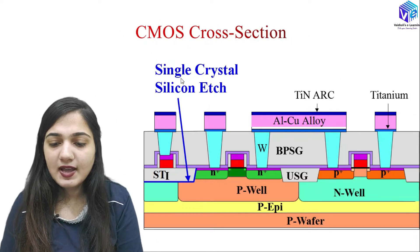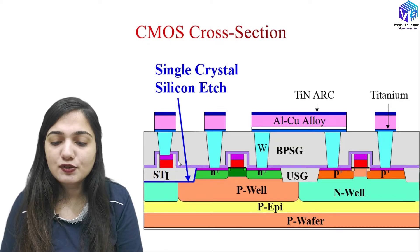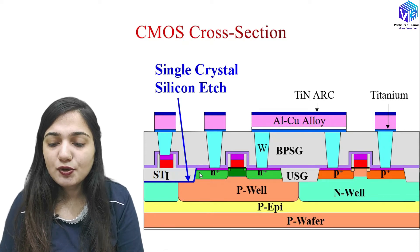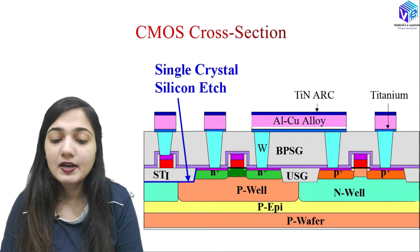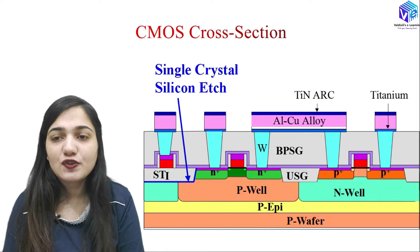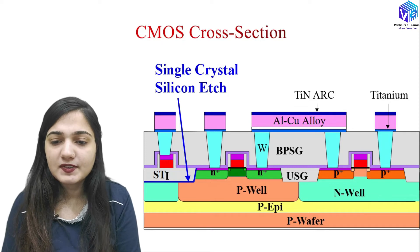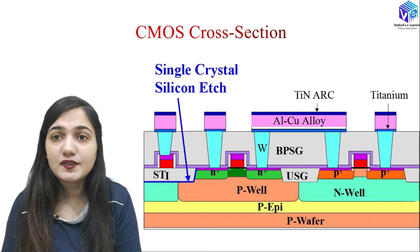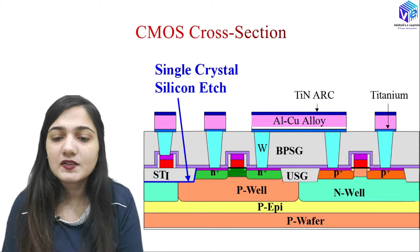You can see here the single crystal silicon etching which is making the shallow trench isolation. This shallow trench isolation is formed when I have etched out the silicon layer, so that one transistor and another transistor which might be present nearby will not be getting shorted out. So I am making the silicon etching for this purpose in the CMOS cross section.